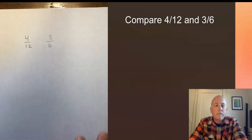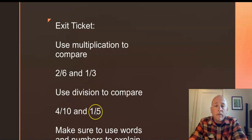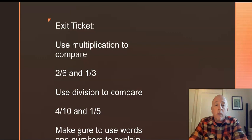Alright, your exit ticket. Use multiplication to compare 2 sixths and 1 third. Also, use division to compare 4 tenths and 1 fifth. Make sure you're using words and numbers to explain your answer. You can go ahead and upload your exit ticket to Schoology, or you can send me a picture of it in an email, or take a picture of it and send it to me in a text. Alright, great to see you. I'll see you next time.